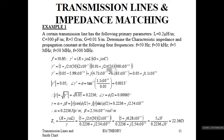For gamma, the magnitude is simply the square root of the magnitude of gamma squared, which is the square root of 0.05, giving 0.2236 per meter. The angle of gamma is the angle of gamma squared divided by 2, which is 0.00065 degrees.